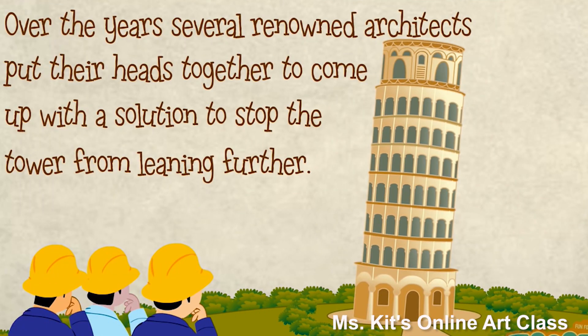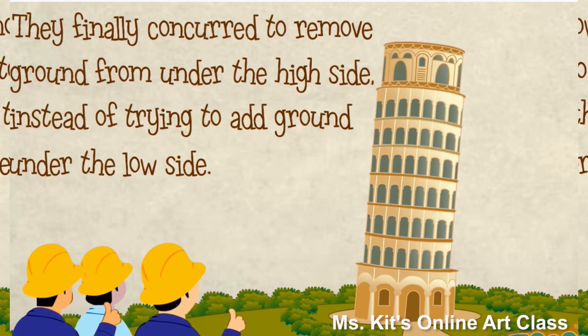Over the years, several renowned architects put their heads together to come up with a solution to stop the tower from leaning further. They finally concurred to remove ground from under the high side, instead of trying to add ground under the low side.